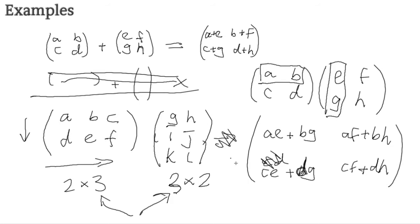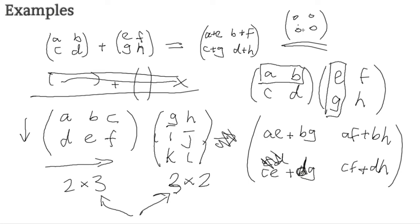Now I'm going to talk about the identity matrix and the zero matrix. Starting with zero: the zero matrix in 2x2 form is simply all zeros — 0, 0, 0, 0. Nothing special. If you multiply anything by the zero matrix, you get the zero matrix, just like multiplying any real number by zero gives zero. If you add any matrix to the zero matrix, you get the original matrix back — the same as adding zero to a normal number.